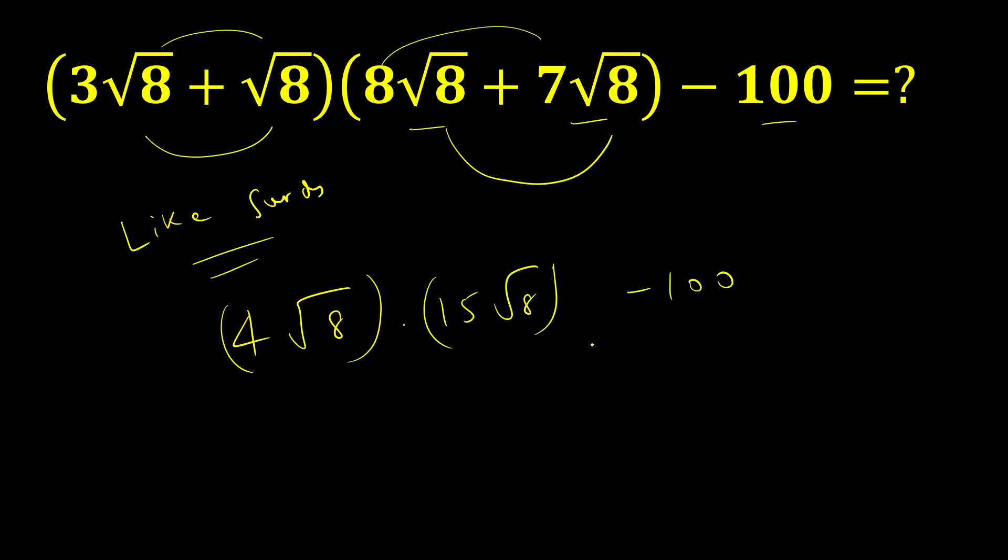Minus 100. Now if I multiply these two, 50 into 4, 60 into √8 into √8, so √8 square.